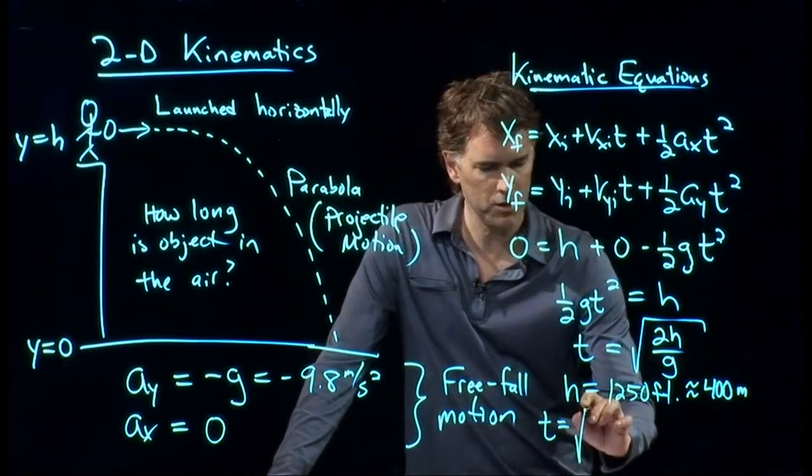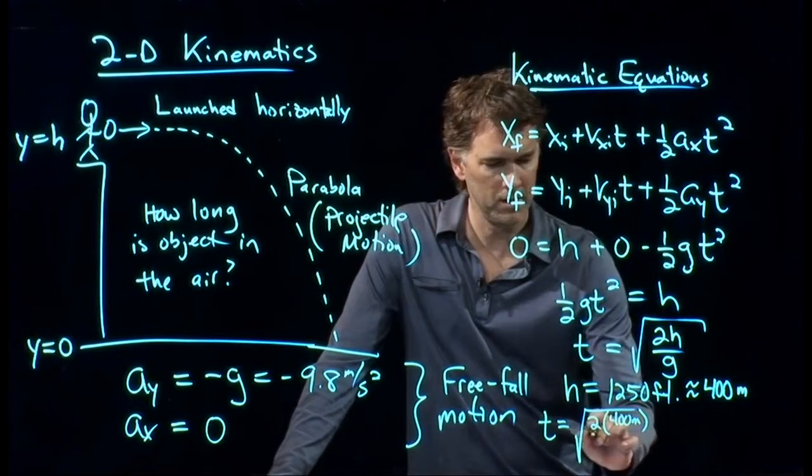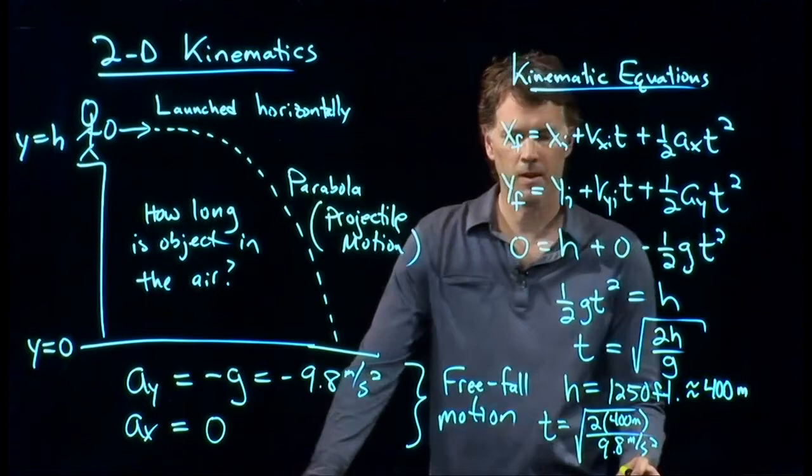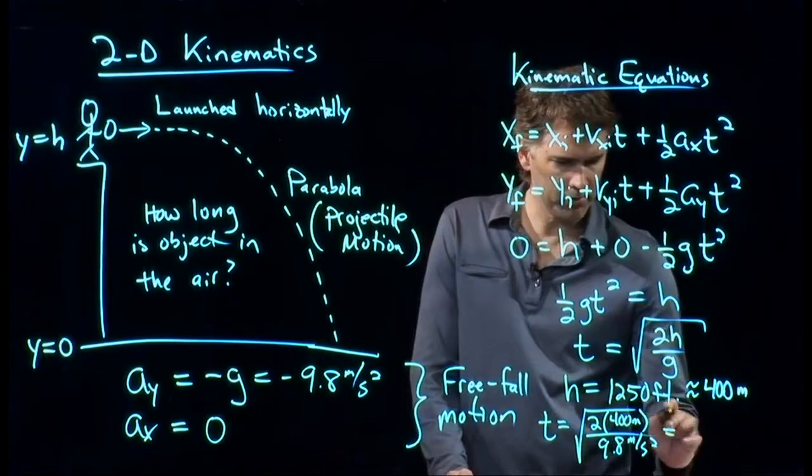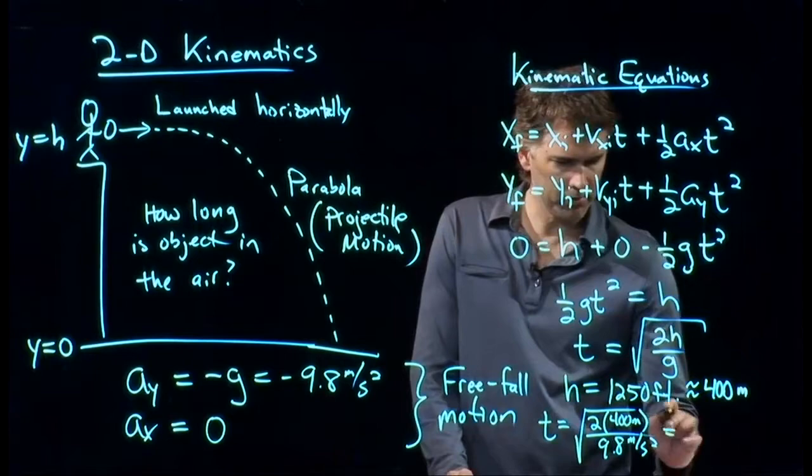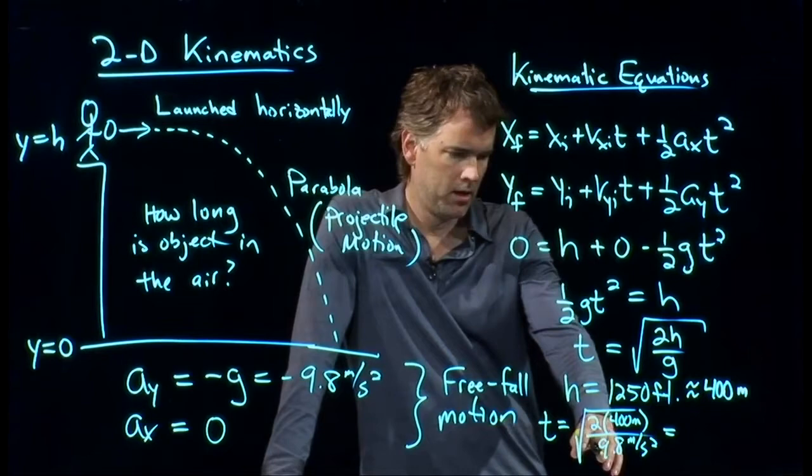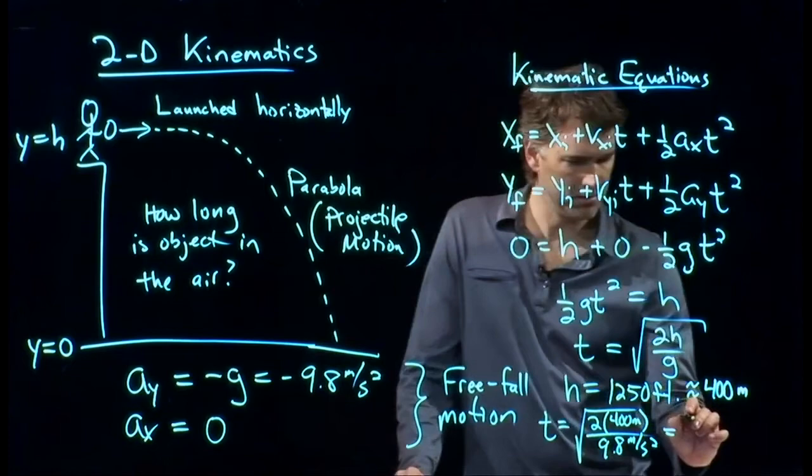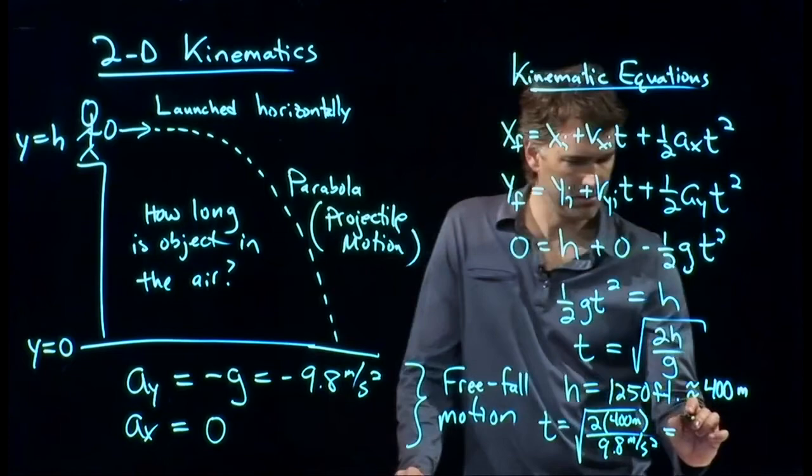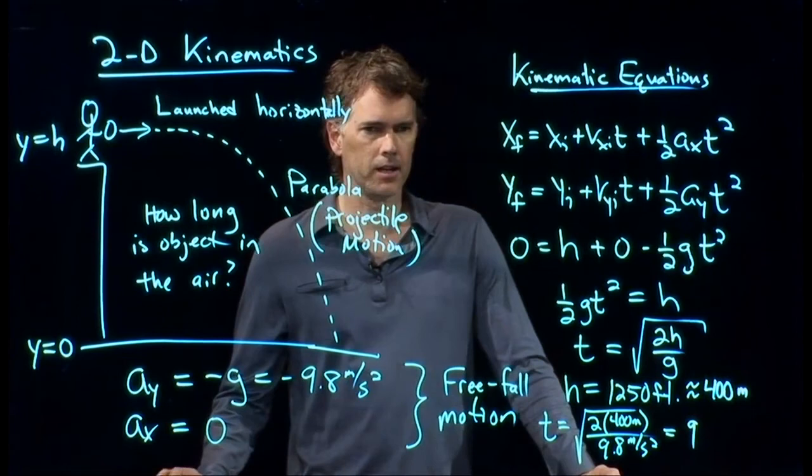And now let's see if we can calculate the time. t, we said, was square root of 2h over g. So it's 2 times 400 meters divided by g, 9.8 meters per second squared. And now we can run this in our calculator, or we can just approximate it. 2 times 400 is 800. 800 over 9.8 is pretty close to 800 over 10, which would be 80. Square root of 80 is about 9. So I would say 9, and did anybody run it on their calculator and get an exact answer? Yeah, what did you get? 9.035.